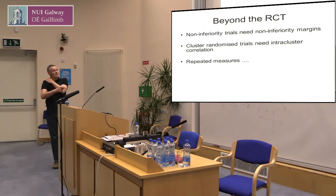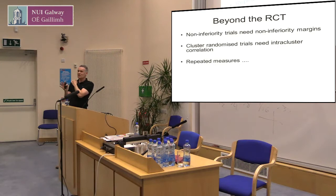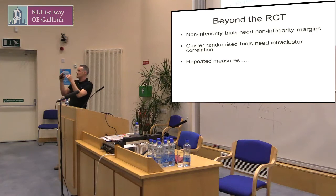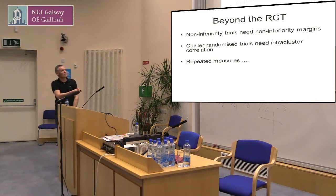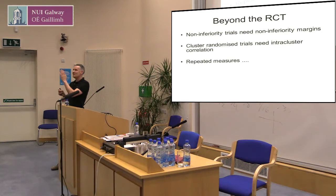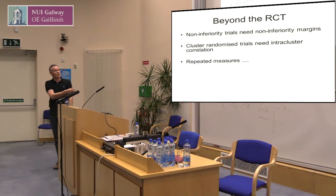The examples I've been given are around the randomised control trial, but there are some extensions. Martin talked about non-inferiority trials, and there are people here from the medical device industry — you have a device, and whether it's going to beat the other device in terms of efficacy is questionable, but it might beat it in other ways: it might be cheaper, lighter, easier to implement. So you may want to show you're at least as good as your competitor. Now you're in the world of the non-inferiority trial, and you're going to have to provide a non-inferiority margin — you're allowed to be a little bit worse by some margin that's clinically meaningless.